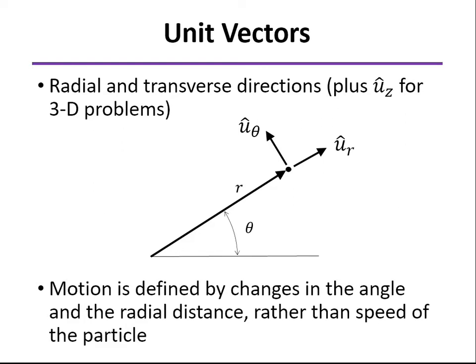In this case, we usually define the motion by changes in the angle, in other words by angular velocity, such as rotating machinery might have a velocity defined in rpms, rather than by the speed of the particle as we did with normal and tangential components. These two a lot of times can be used interchangeably. Sometimes it just depends on what information you have given as to which ones are more convenient to use.